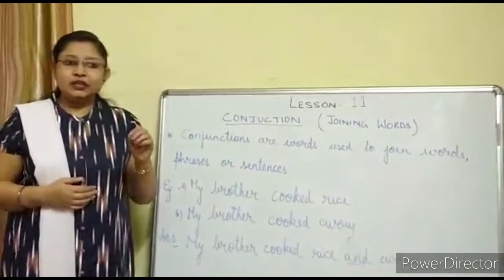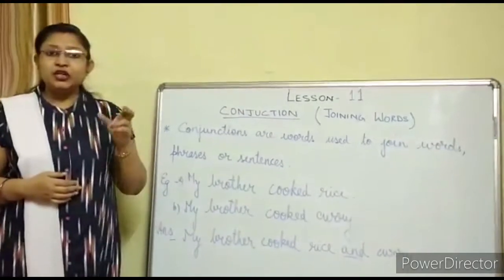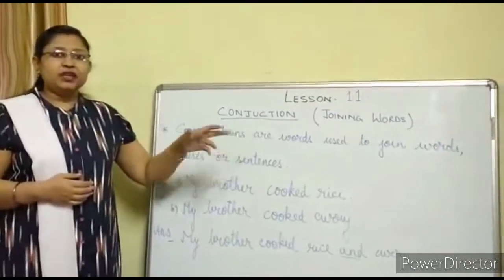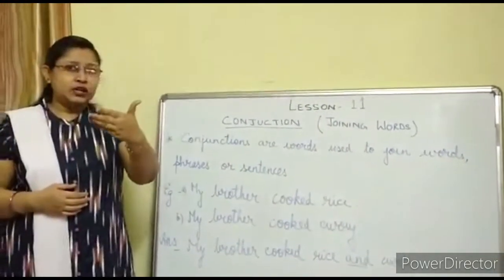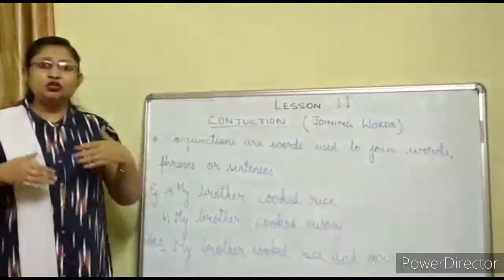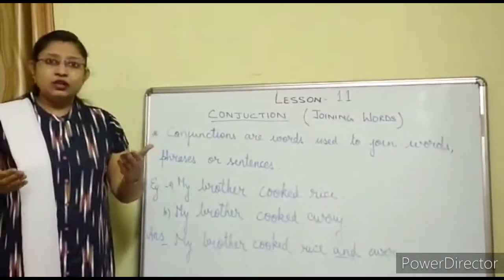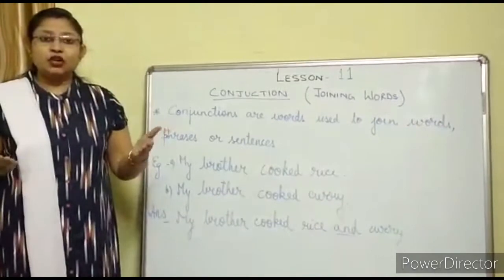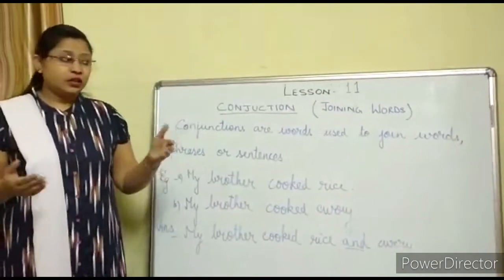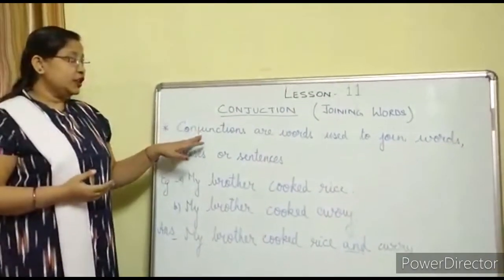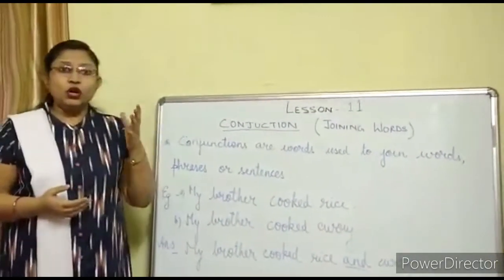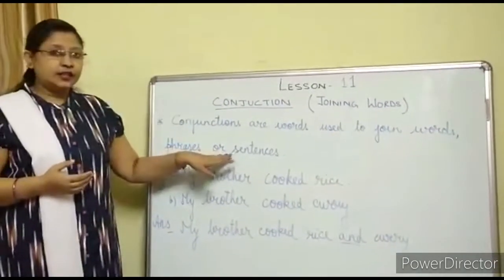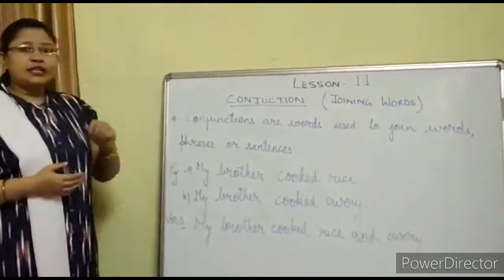Conjunctions are special words which are used to join other words. These words can be two nouns, two adjectives, two pronouns, or maybe one noun and one pronoun. So conjunctions are used to join words, phrases, or sentences.